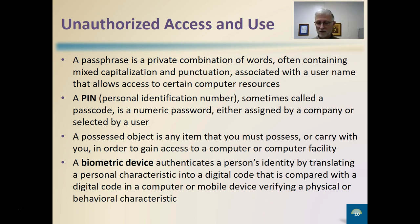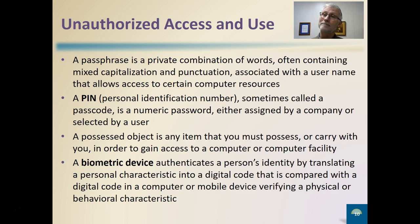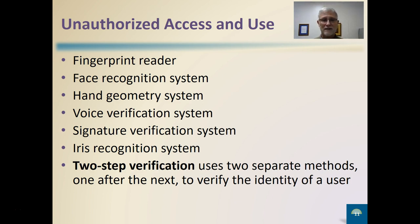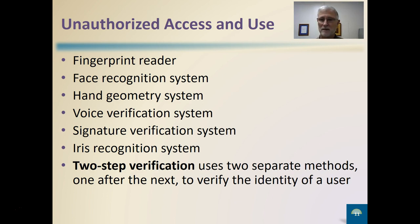Biometric devices are another layer of protection. Some iPhones now use facial recognition to log you in and out, or you can use a thumbprint or fingerprint to access your system. Types of biometric devices include fingerprint reader, face recognition, hand geometry, voice verification, and retina or iris scans. Some places are also implementing a two-step process where you type your password and then receive an email or text with a six-digit code to confirm identity.